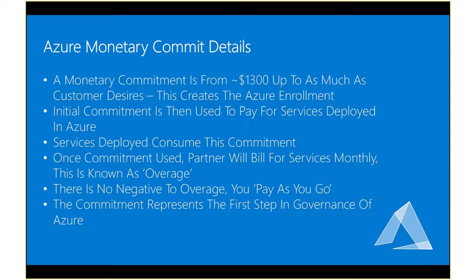A lot of customers put just enough in there to get started. They're not really concerned about the long term because they can also pay as they go. Once a commitment is used, the partner that you are using to get services from Microsoft will basically bill you for monthly services. So for every month you're going to get a bill for everything that went over your minimum commitment. This is known as overage. The important point to mention about overage is it sort of has a negative connotation — it doesn't mean anything negative. It just means you're paying as you go, so there are no extra fees for going over your minimum commitment.